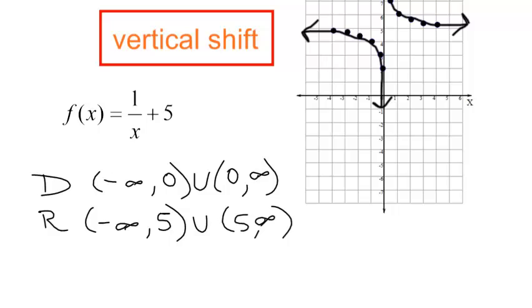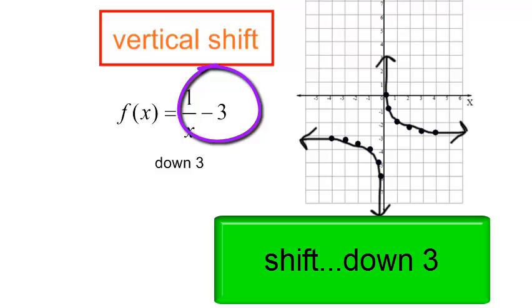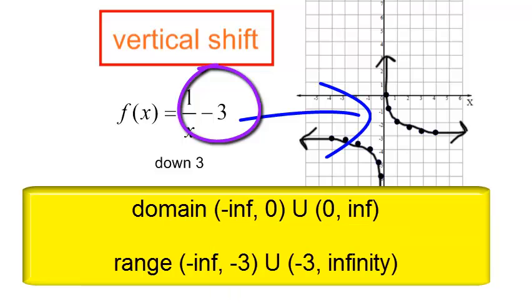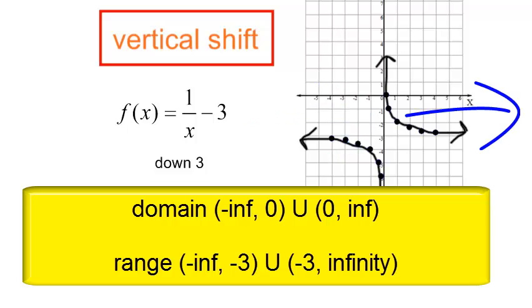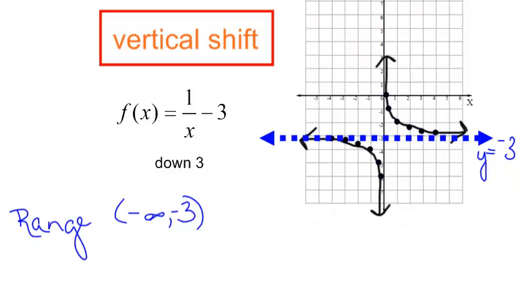Now let's try one more vertical shift problem. If I have f of x is equal to 1 over x minus 3, that is the graph of 1 over x shifted down 3 spaces. The domain is still negative infinity up to 0, stop, then 0 to infinity. But my range changed. The horizontal asymptote is the line y is equal to negative 3. So the range is negative infinity up to negative 3 — stop, do not include negative 3 — then it starts back right after negative 3 and the graph goes to infinity.